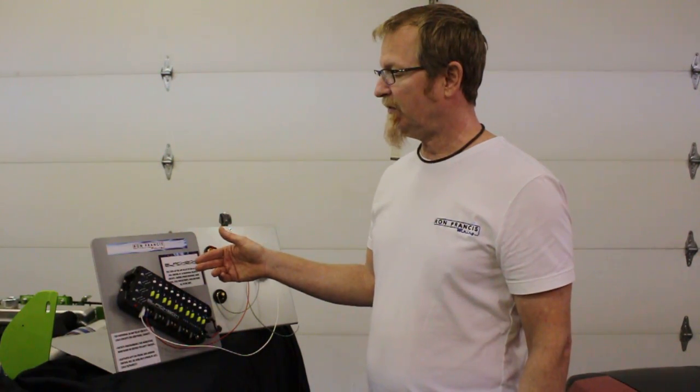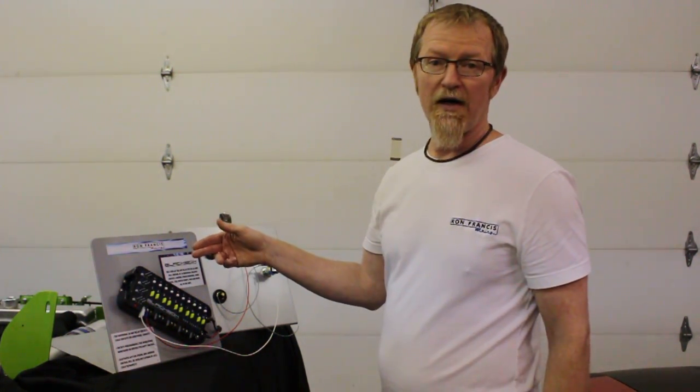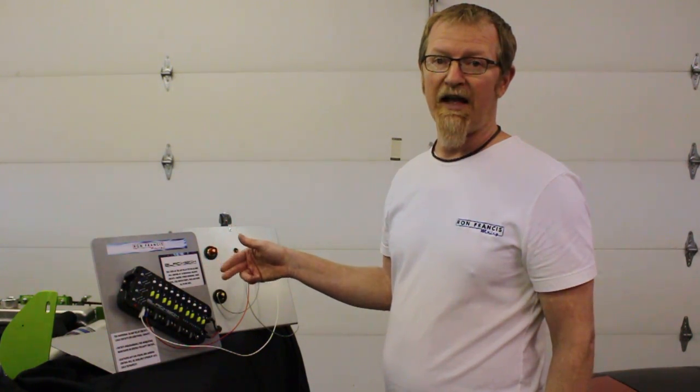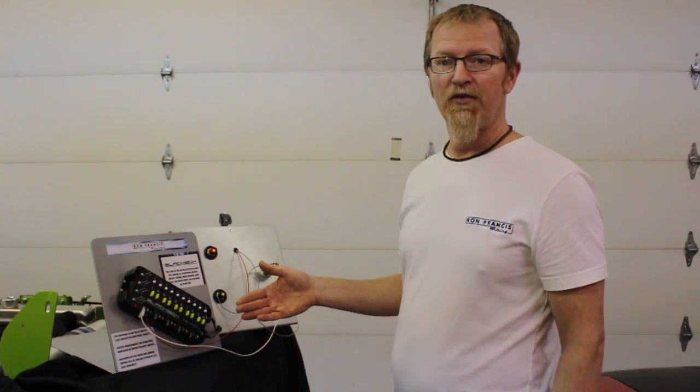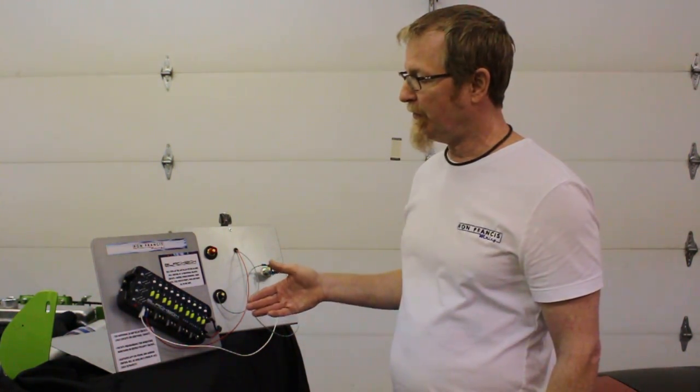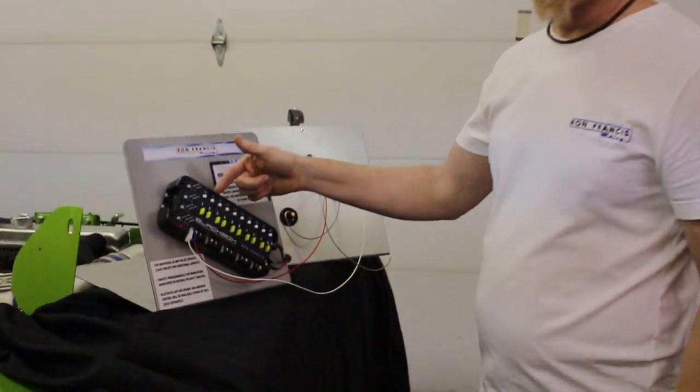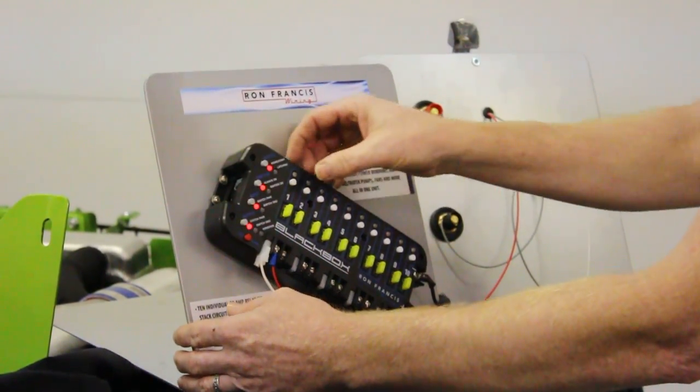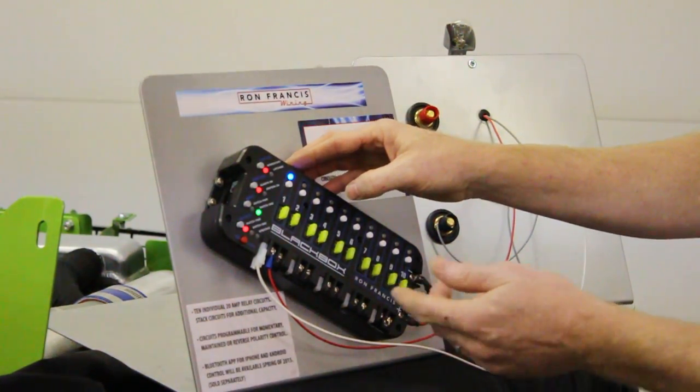For example, if you wanted to make a 40 amp circuit, you could take two of the individual circuits and basically put them together so that they are a 40 amp circuit. So if we wanted to make a 40 amp circuit out of number one and two, what we could do is set it up.